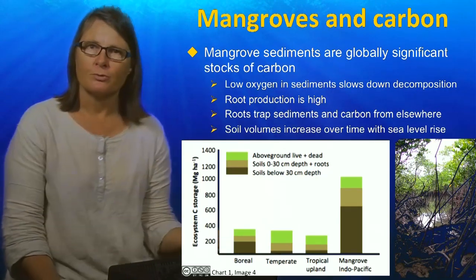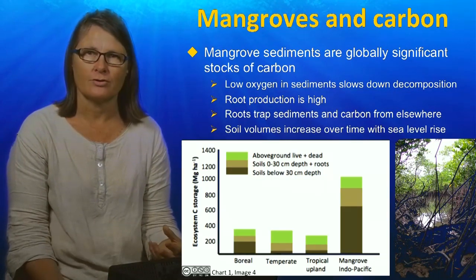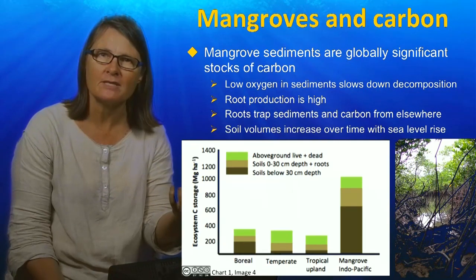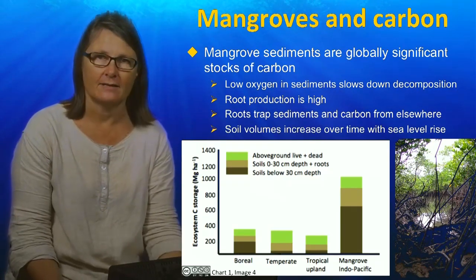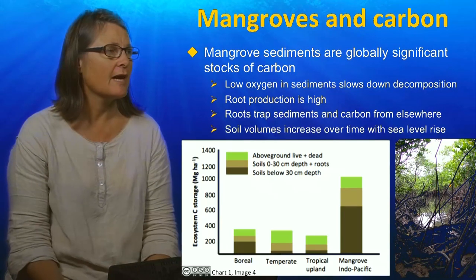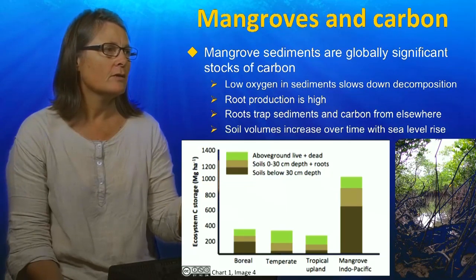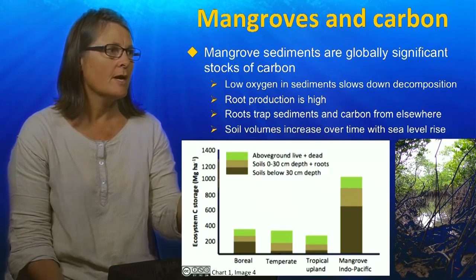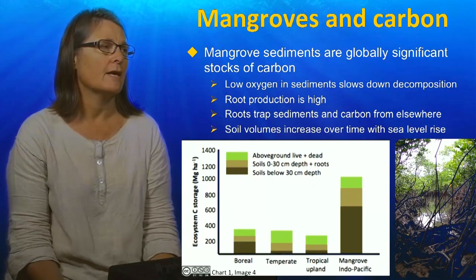Mangroves also have huge carbon stocks and perform the service of carbon sequestration — taking carbon dioxide out of the atmosphere and sinking it into their biomass and particularly their soils for decades and even millennia. Mangrove sediments are globally significant carbon stocks. If you look at this slide, you can see ecosystem carbon storage on the y-axis for four different kinds of forested ecosystems: boreal, temperate, and tropical upland forests. Notably, Indo-Pacific mangroves have a much larger carbon storage than the other ecosystems.